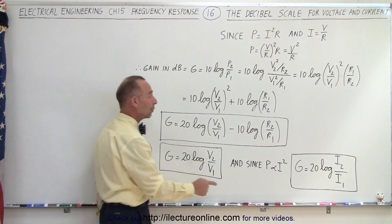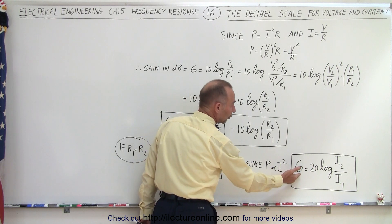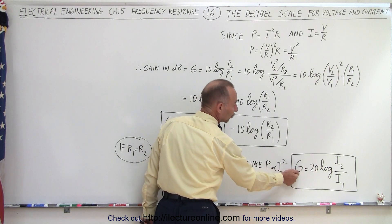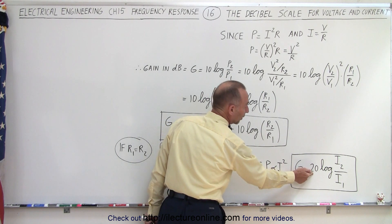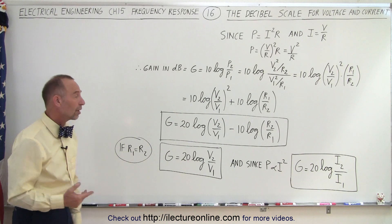And since the power is proportional to I squared, we can come up with the same kind of relationship for the current, and so we can say that the gain for the current is equal to 20 times the log of the output current over the input current. So now we have three equations.